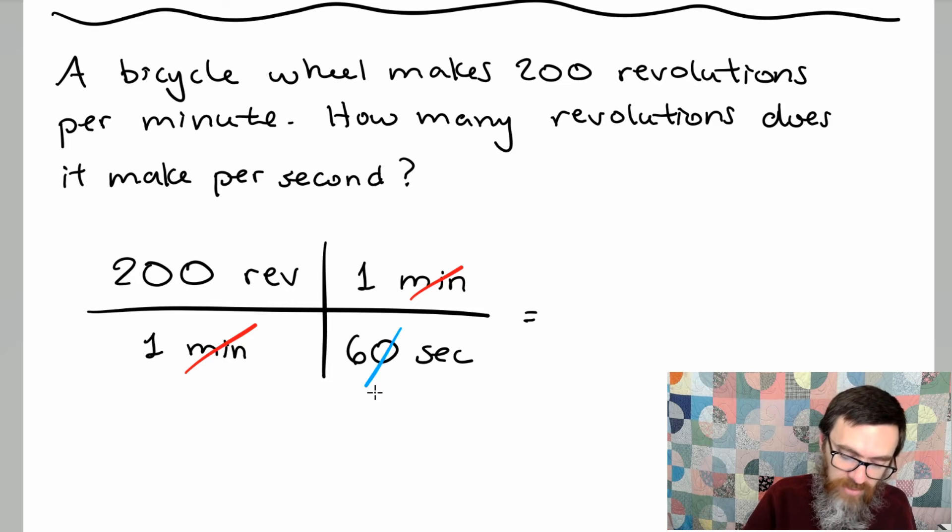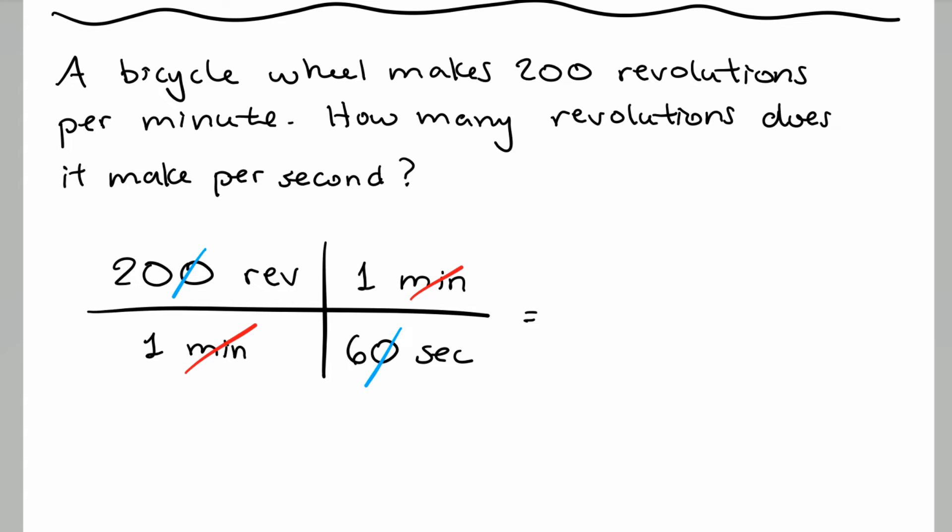I always like to do my simplifying so I can reduce that. We end up with 20 over 60 which is 10 over 3. So we could say 10 thirds revolutions per second or we could say that's going to make 3 and a third revolutions per second. Either way it's going to be the same thing. If you're doing this in MyMath, make sure you read the instructions so you know how they want their answer.